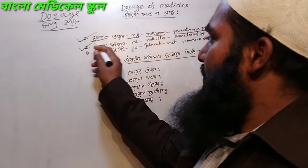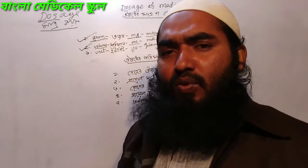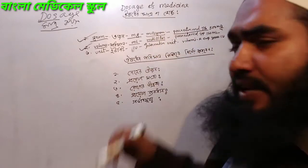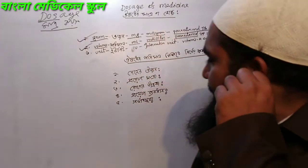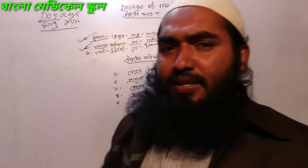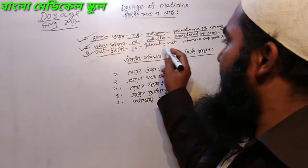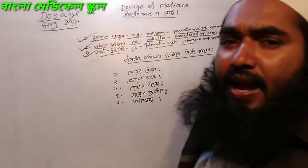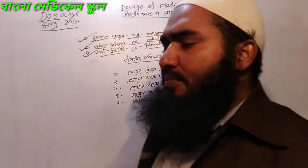Now, number 2 is the volume — mL, milliliter. Milliliter. For example, paracetamol syrup — paracetamol 120 mL — 120 milliliter is 1 unit. Number 3 is the international unit — IU.